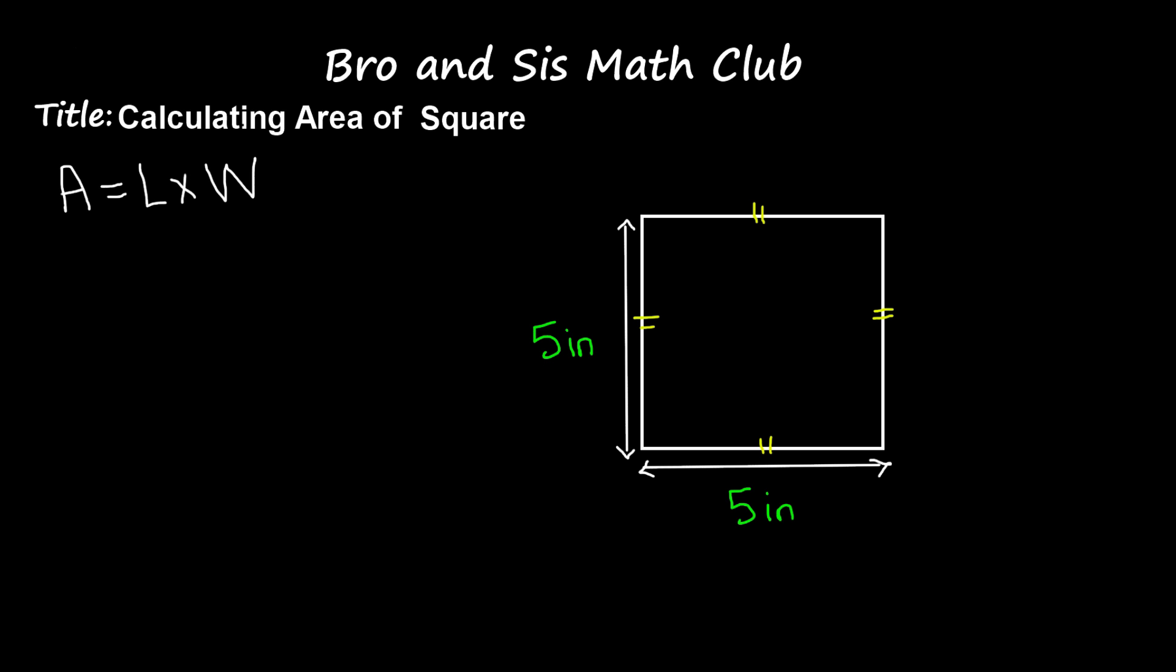To calculate the area, we need to multiply 5 inches by 5 inches. So, 5 inches times 5 inches. Now we know that area equals 25.